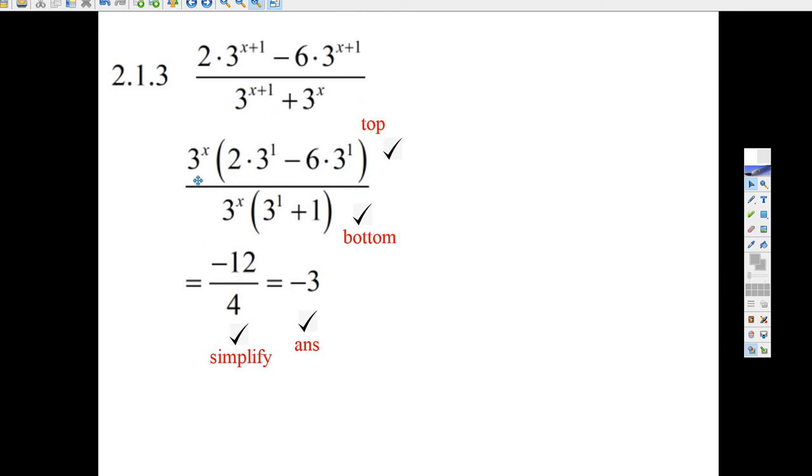And all you have to do is factor it out. 3 to the x times 2 times 3 to the 1. That's what's left here. If I go 3 to the x times 2 times 3, I get exactly this.